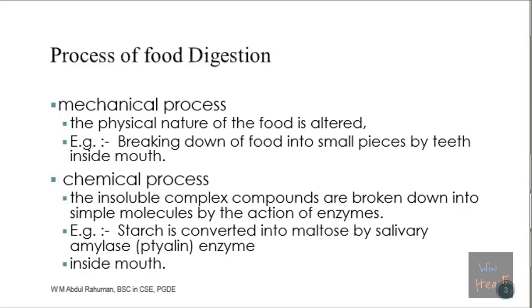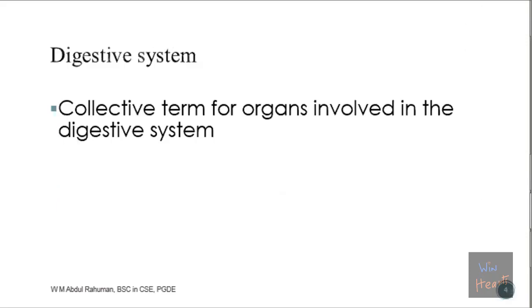When we speak about the digestive system, it is a collection of organs which performs the digestive function. What is the basic structural and functional unit of a human being? A cell. A collection of cells that perform the same function forms a tissue, tissues form into organs, and then you have the system. Similarly, the organs that perform digestion are known as the digestive system.